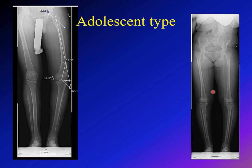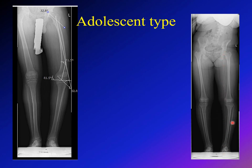Here are two more examples of adolescent Blount disease. One is an obese adolescent boy with left-side Blount — you can see the difference between right and left, with obvious varus of the left lower extremity, and the left side is shorter due to limb length discrepancy. Another example shows a mild adolescent Blount in a girl: the right mechanical axis is near the center of the knee, while on the left it is medial to the knee, indicating varus.